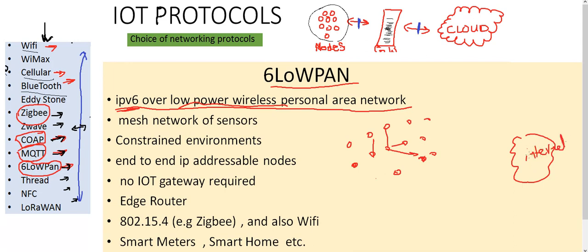So 6LoWPAN is actually a mesh network of these sensors or nodes. What do we mean by mesh network? That I'm going to explain now.